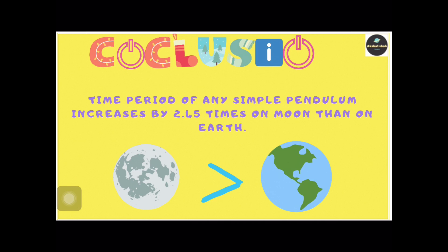Let's take an example. If a simple pendulum takes 1 second to oscillate once, then the same pendulum when kept on the Moon will take 2.45 seconds to oscillate once.